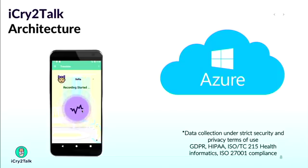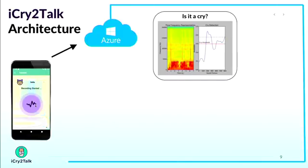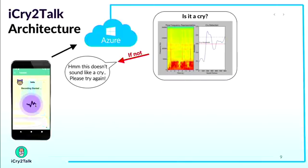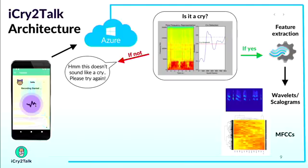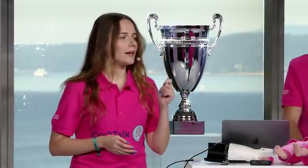The parent records the cry, which is securely uploaded on Azure Cloud. We use the cry detection system to identify if a sound recorded is indeed a cry. Then we extract some features to be used as input for our machine learning and deep learning classification algorithms. iCry2Talk is more than just an app — it's a holistic system based on inclusivity, as we support cry translation using sign language for hearing impaired parents.